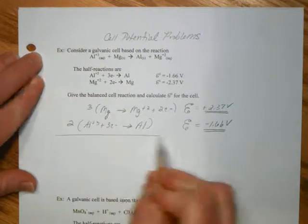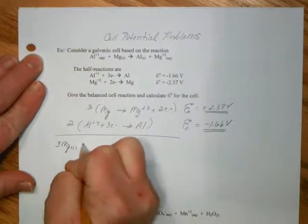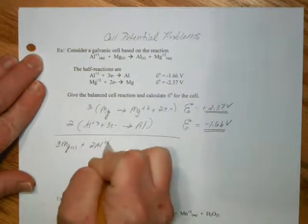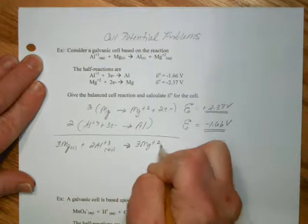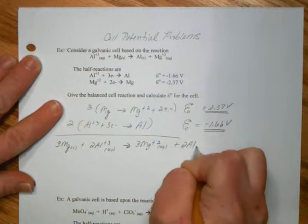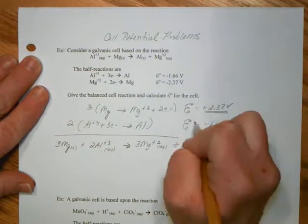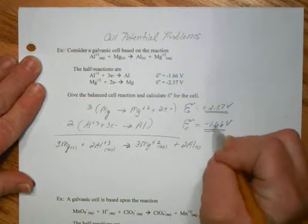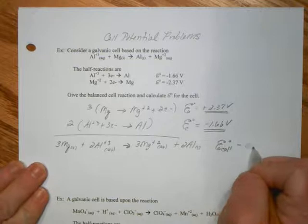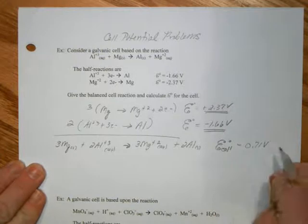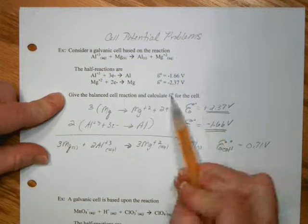So what I will get then is multiplying through: three magnesium solid plus two aluminum plus three will give me three magnesium ions plus two aluminum solid. And the E of my cell standard will be just adding these values, which I get a value of positive 0.71 volts. We were asked to give the balanced cell reaction and the E naught for the cell.